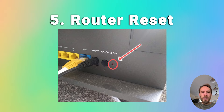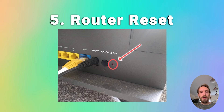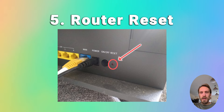Finally, if none of that has helped, try resetting your router. There will be a hard reset switch on the back — insert a paper clip or pen, hold it for at least 10 seconds to reset the router back to factory settings, then try connecting your TV again.